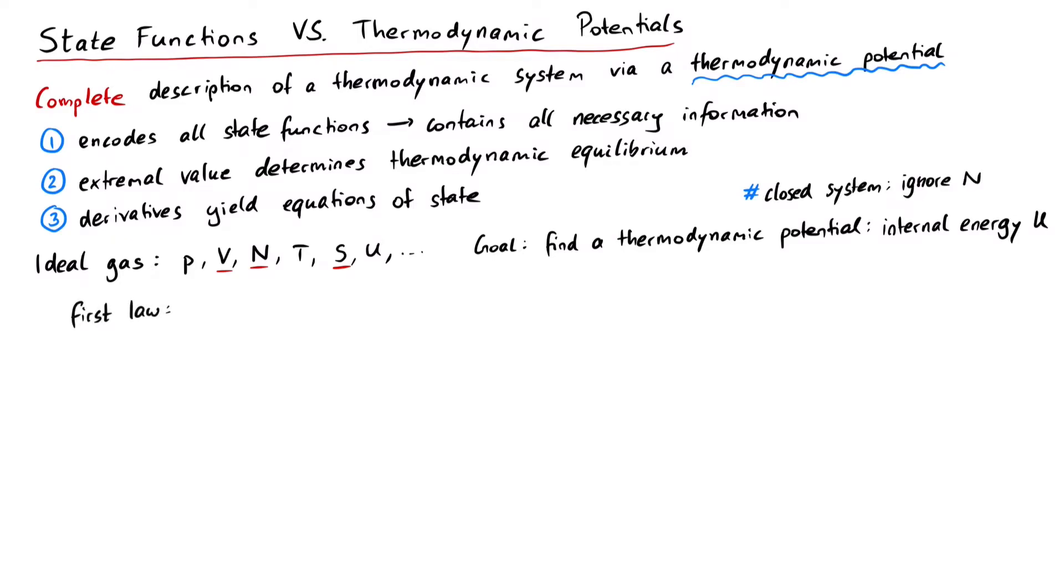The first law of thermodynamics tells us that an infinitesimally small change in the internal energy is given by delta W plus delta Q, which are in turn given by minus pdV plus TdS. This looks like the internal energy depends on p, V, T, and S. We know, however, that the natural variables are only S and V. Therefore, we know that p and T are actually functions of V and S. We need to find a way to express p and T in terms of V and S.